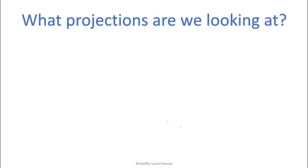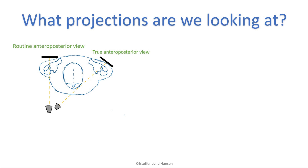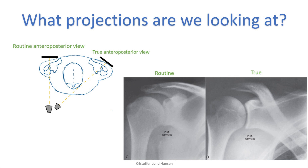Now let's take a look at the different projections. We have two types of antero-posterior images that we can take. Antero-posterior is so named as we shoot x-rays from the anterior side and receive the amount of absorbed x-rays from the posterior side. First we have the routine variant and the true variant. The routine anterior-posterior view is the most commonly performed, but it actually hits the shoulder bones at an angle, so it is not really anterior-posterior. The true variant hits the shoulder bones from a better angle and is actual anterior-posterior. The result is a slightly different x-ray.